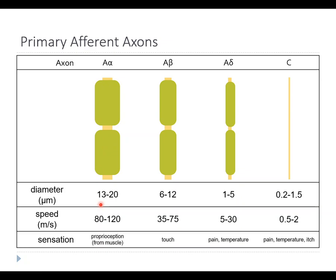The different axon types conduct information at different speeds and are used for different types of sensations. A-alpha axons come from stretch receptors and touch receptors in muscle — not really skin touch receptors. They detect the tension and length of muscles, which is important for proprioception, your sense of where your limbs are relative to the rest of your body. The bulk of your skin touch receptors are A-betas — the main, medium-fast touch receptors from the skin. A-deltas and C fibers mainly function in pain, and to some extent temperature and itch — they don't convey much information about touch. We'll come back to those later.